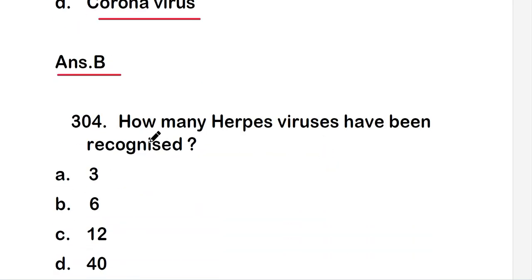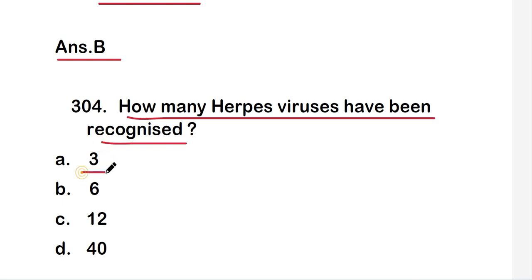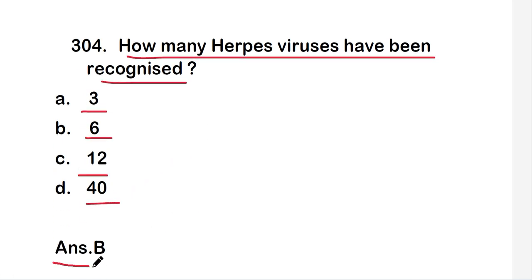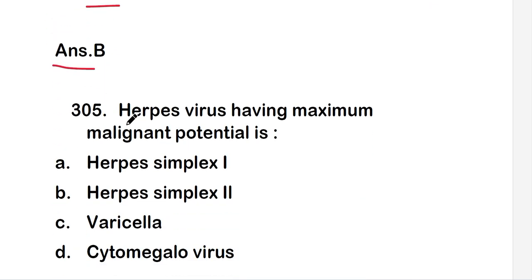The next question is: how many herpes viruses have been recognized? The options are 3, 6, 12, or 40. The right answer is option B, that is six. So six herpes viruses have been recognized so far.